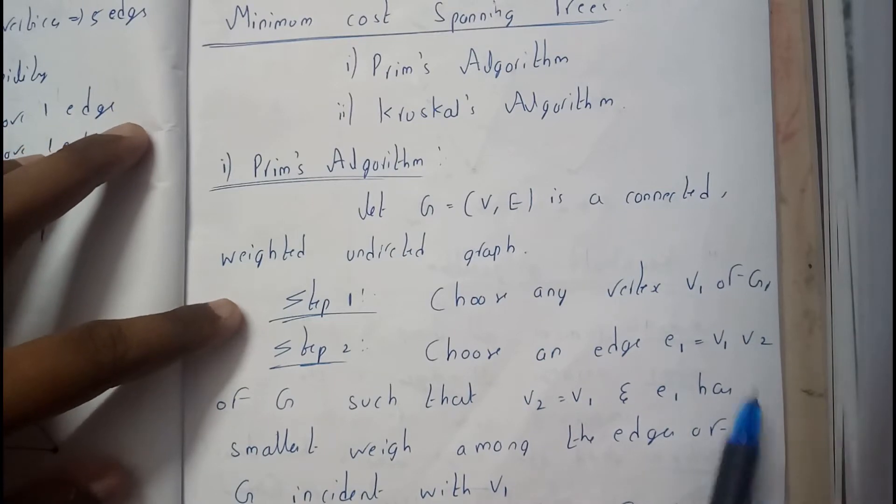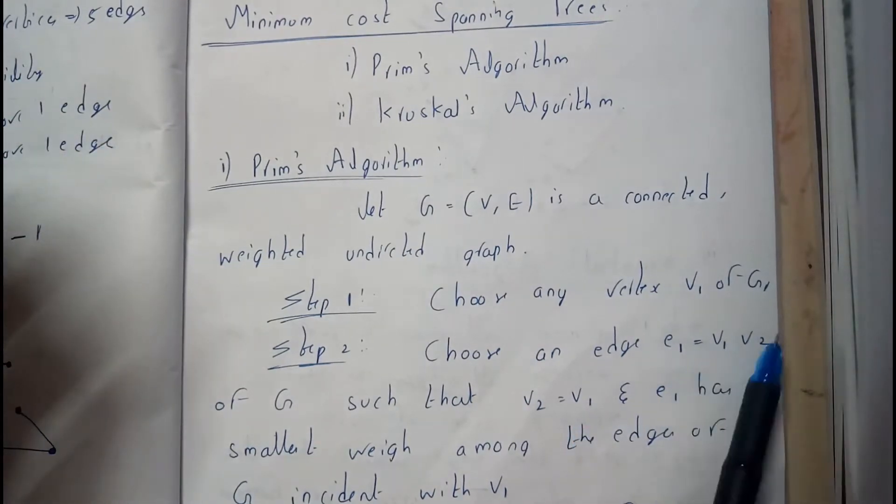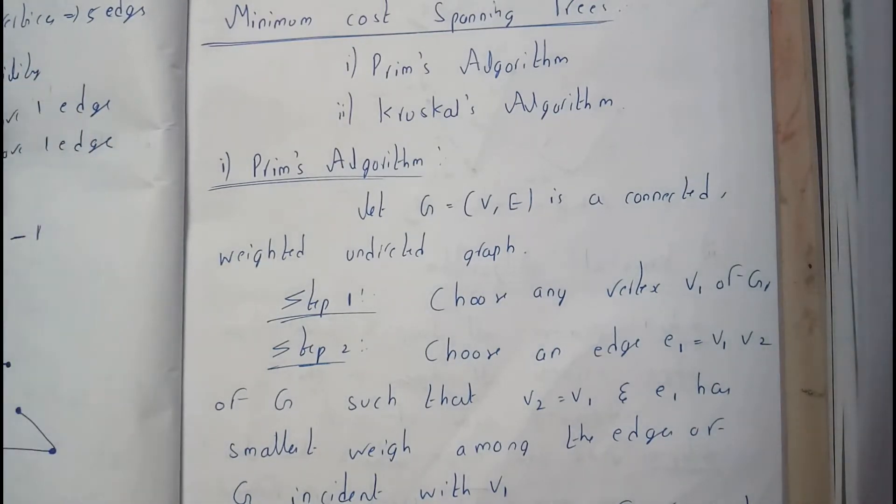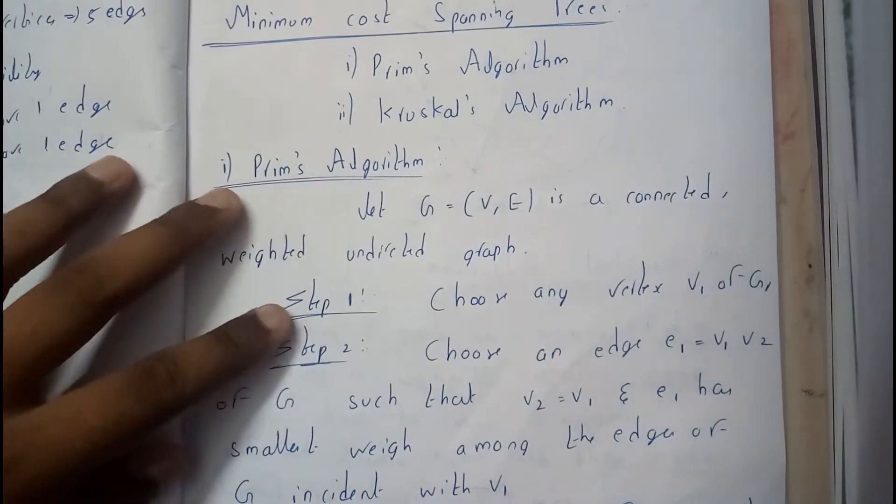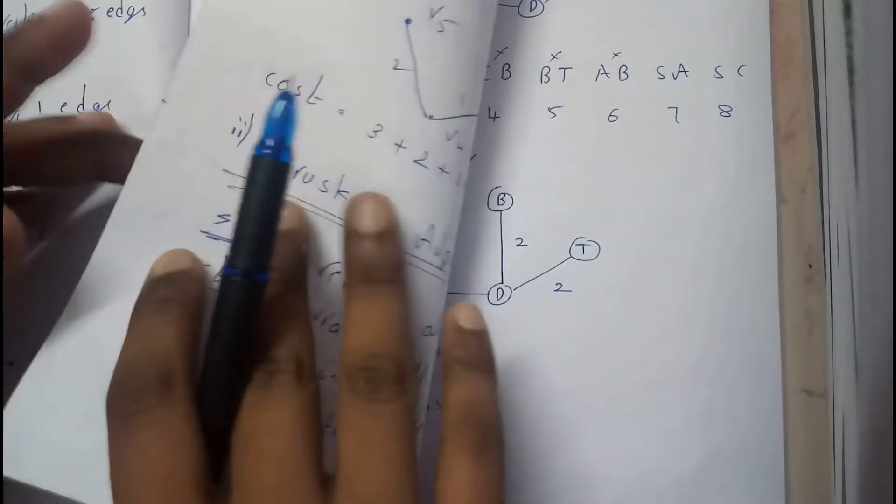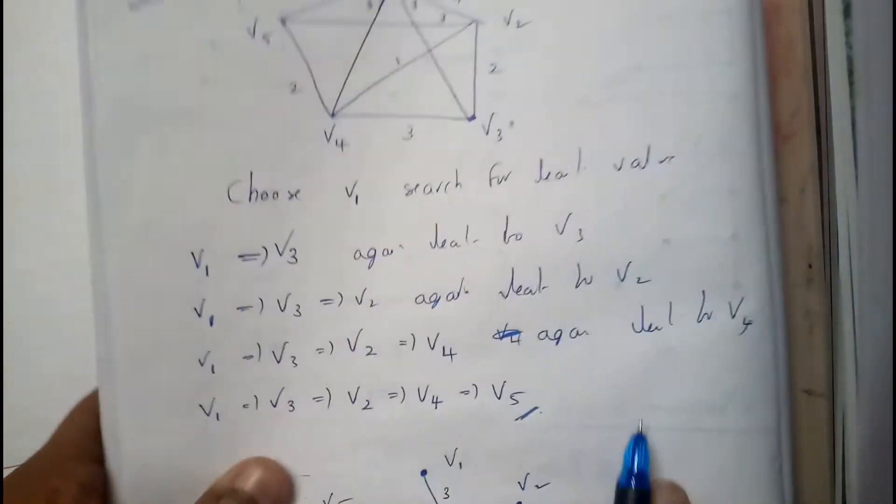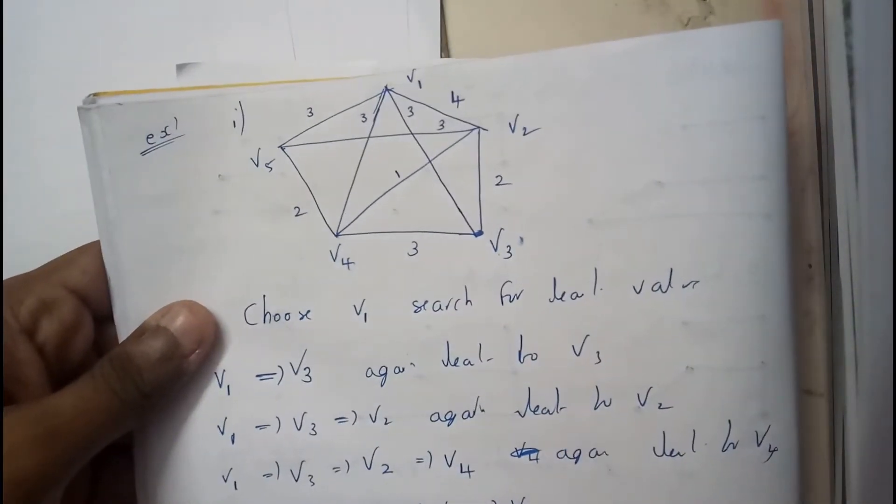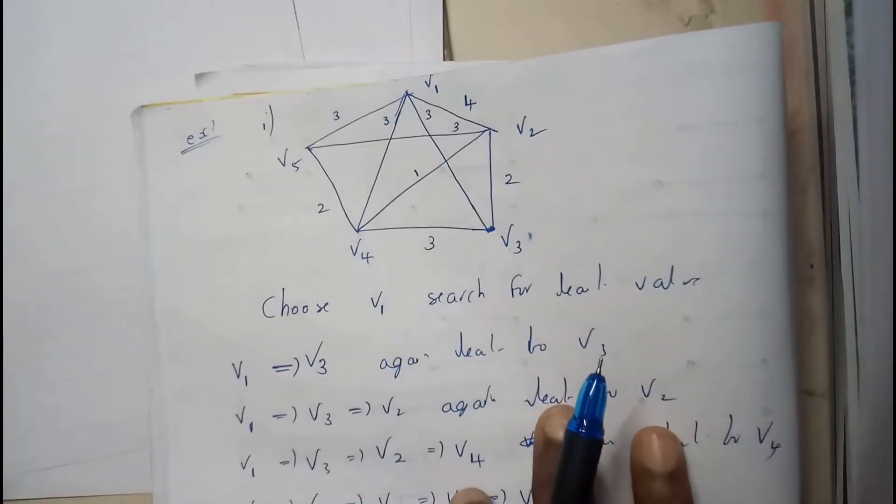Continue step 2 for V2. So now we travelled V1 to V2, so now from V2 we will be continuing it. Up to N minus 1, you should travel like that. I hope you got some small idea about what at all is this Prim's algorithm. Let's go in depth with an example.